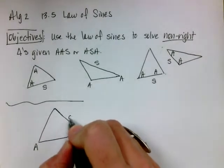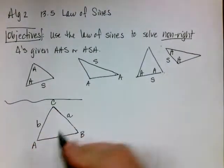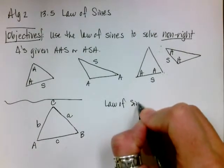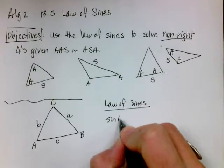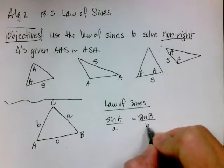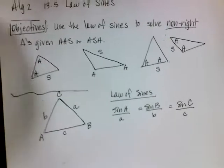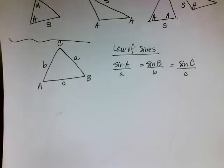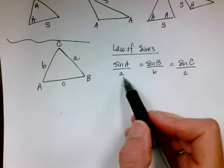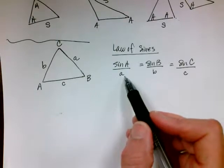Let's say this is angle A, and its opposite side is little a. Angle B, its opposite side is little b. And angle C, its opposite side is little c. Here's what the Law of Sines says: the sine of angle A is to side a, as the sine of angle B is to side b, as the sine of angle C is to side c. All the Law of Sines does is allow you to solve using those ratios two at a time — it doesn't matter which two, just dependent on what triangle information you have.